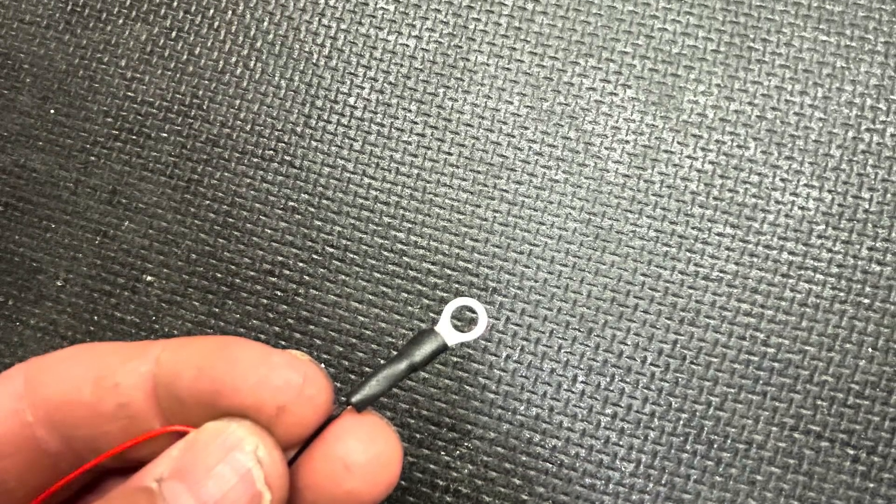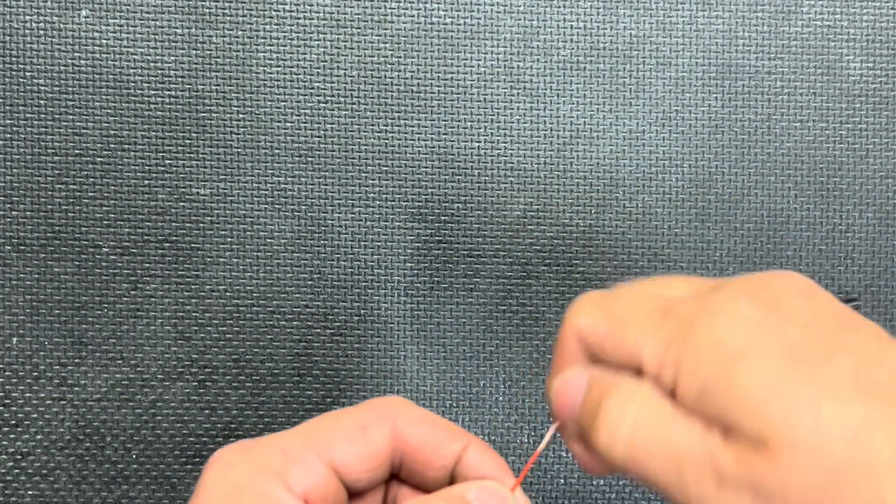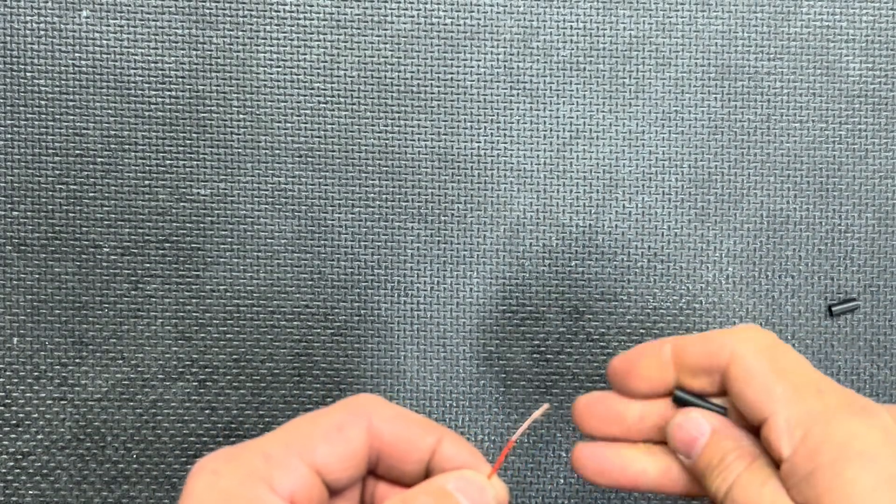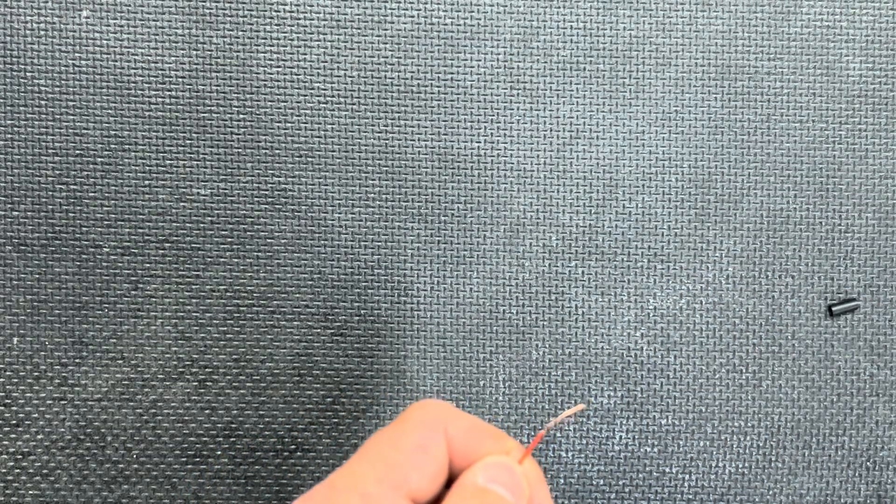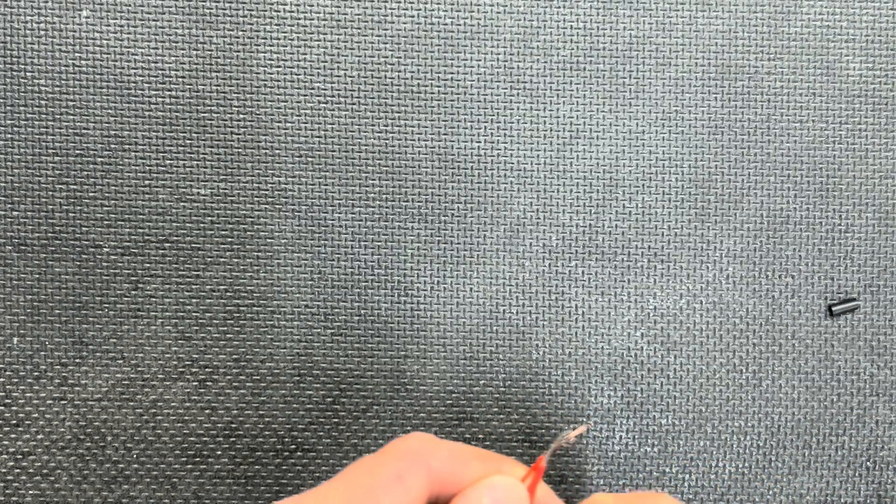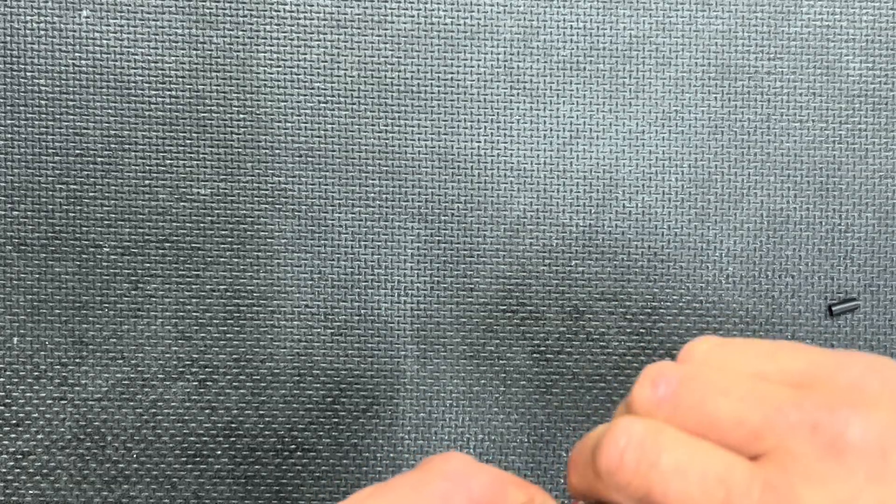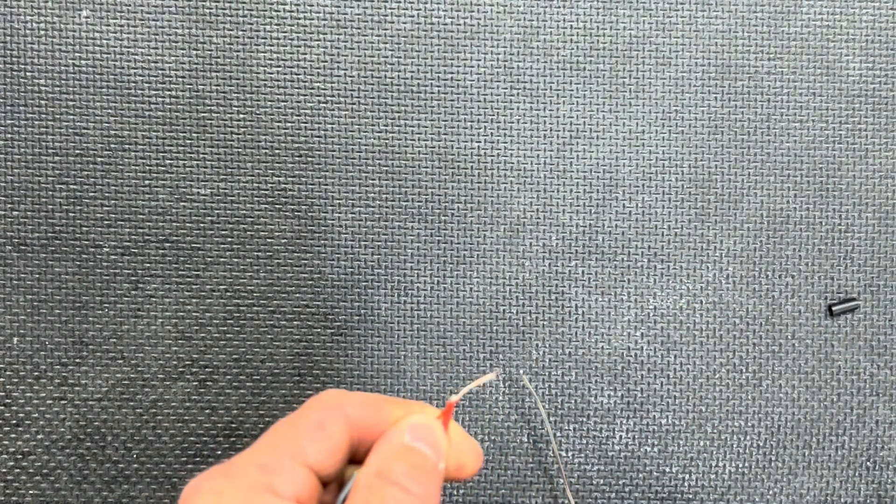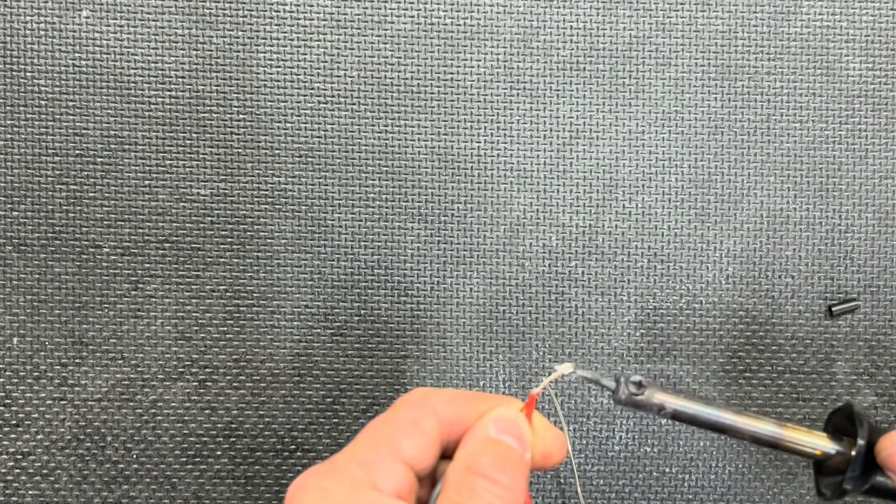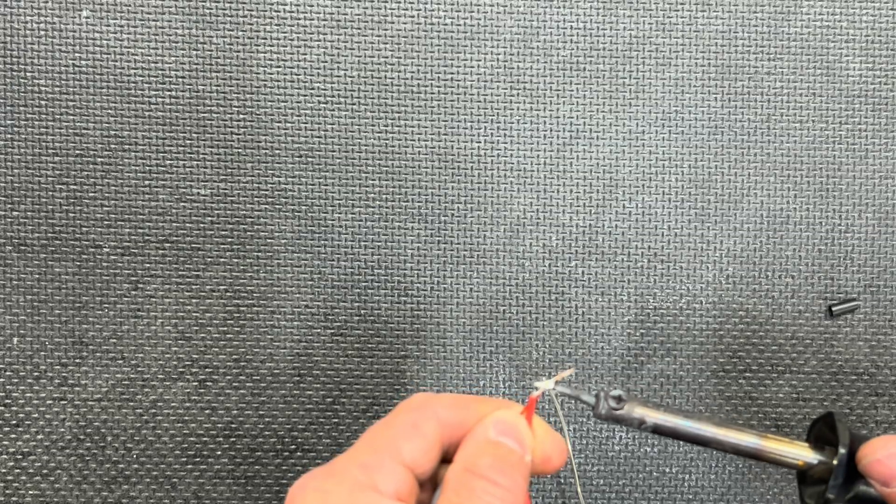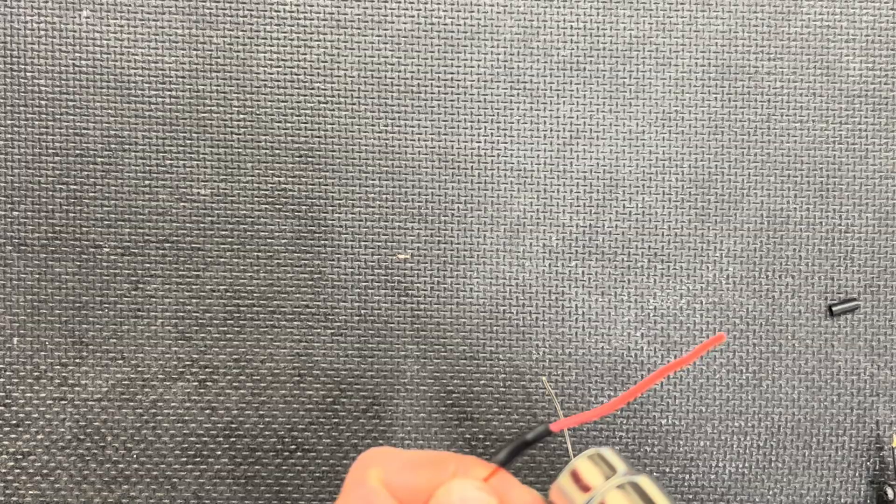And shrink the heat shrink tubing onto the terminal ring. For the red wire, we're going to put on another small piece of heat shrink, slide that back as far as you can, and then we're just going to be adding a little piece of an extension wire here. So twist these up, a little bit of solder, slide the heat shrink back over the exposed wires and apply some heat.